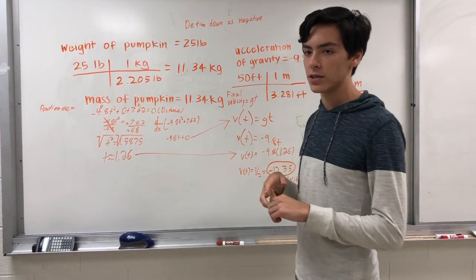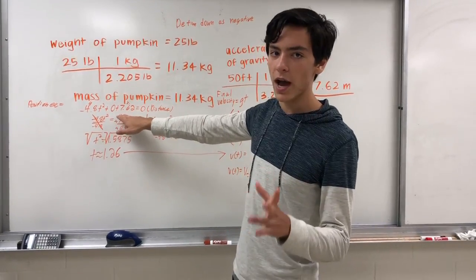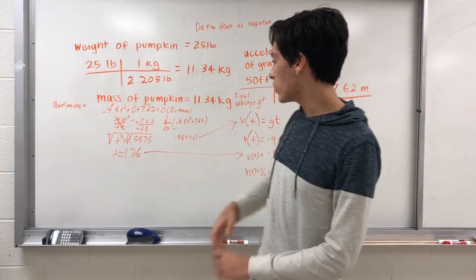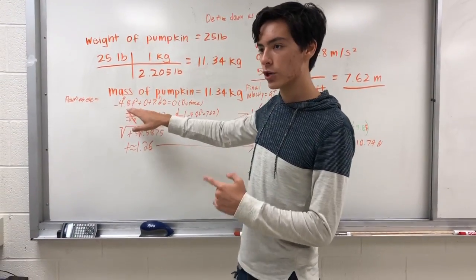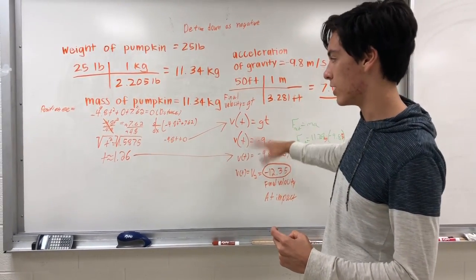In order to find the velocity of the pumpkin as it's falling, we created a position versus time equation here, and then we took the derivative of this equation in order to find the acceleration over time, so we could find the final and average velocities.